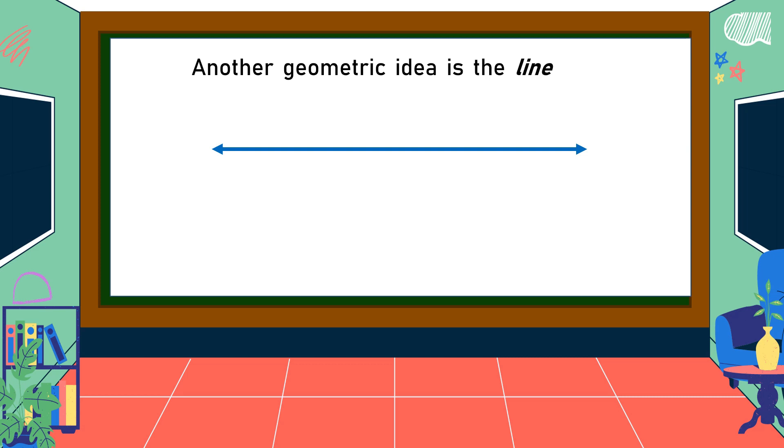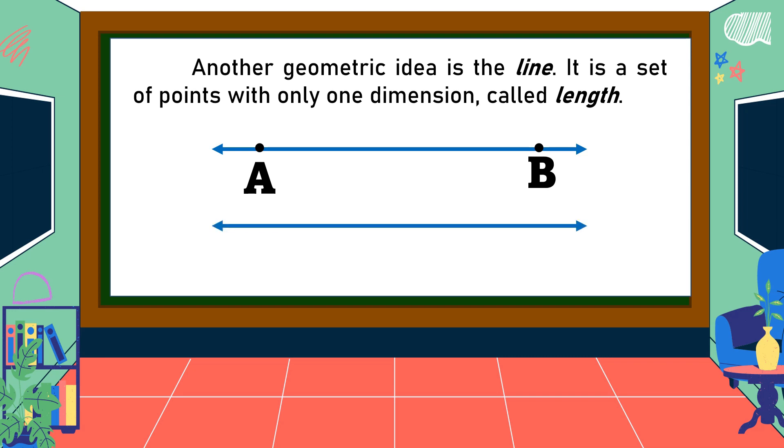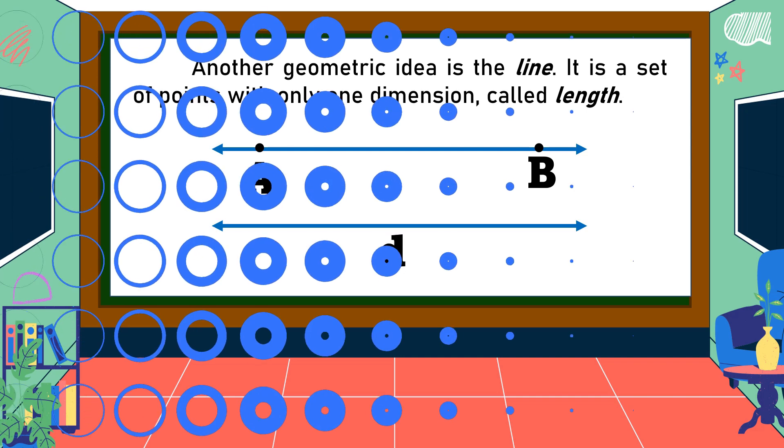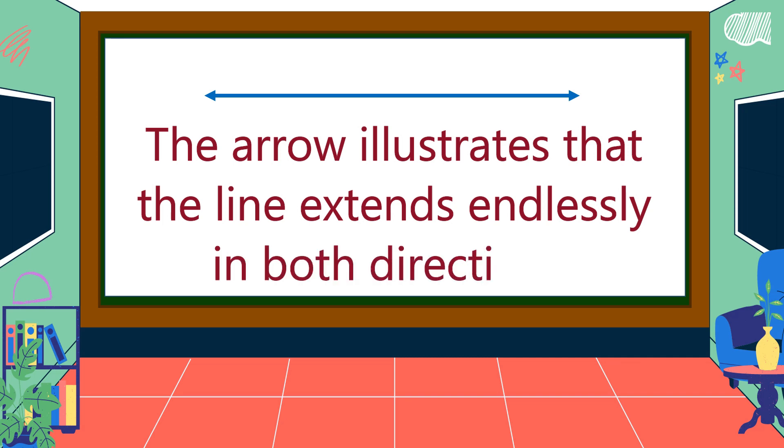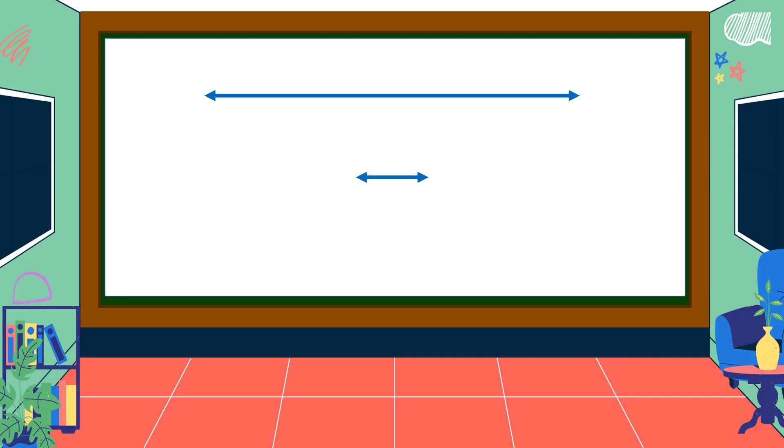Another geometric idea is the line. It is a set of points with only one dimension called length. Here is an illustration of a line: this is line AB. A line may also be named by a single lowercase letter, this is line D. The arrow illustrates that the line extends endlessly in both directions. We use this symbol for a line.